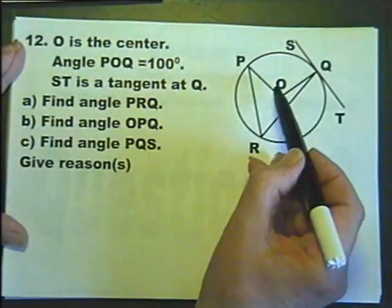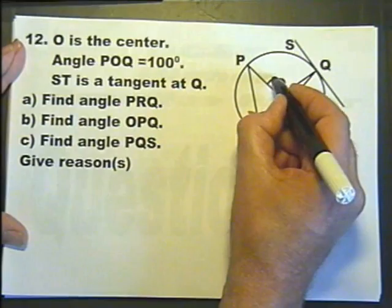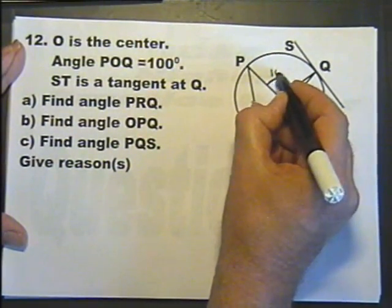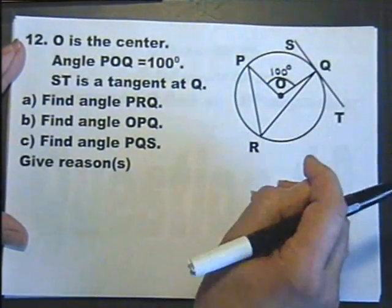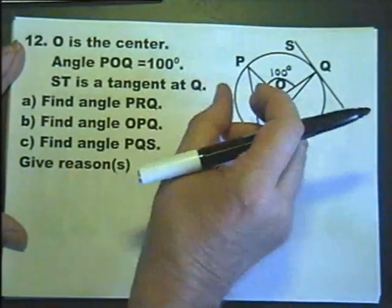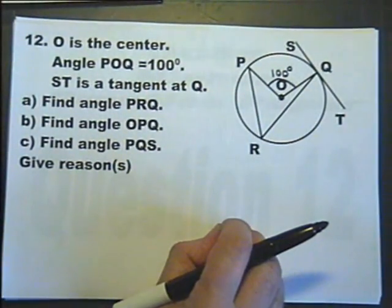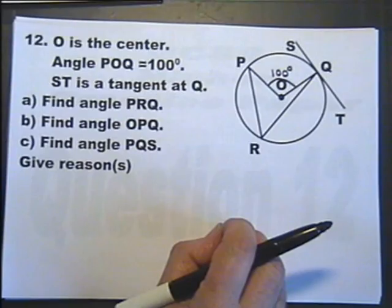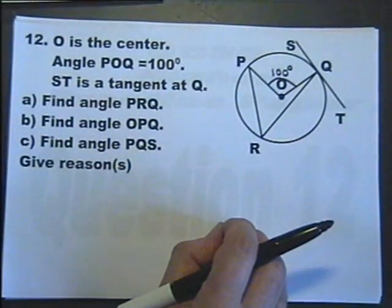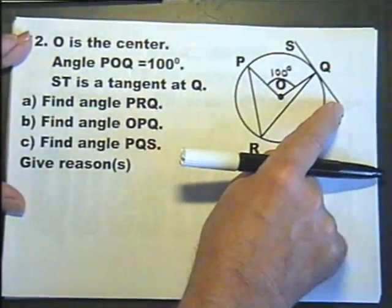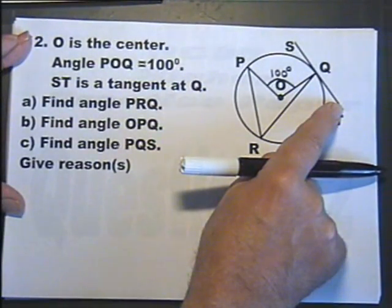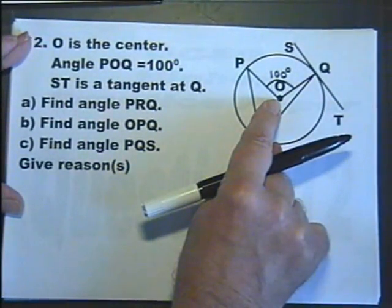Angle POQ is 100 degrees. Sometimes the examiner writes values on the diagram, sometimes not, so you can add them. Remember the exam paper is yours, so write on it anything that helps. ST is the tangent at Q. That's all the information we've got.